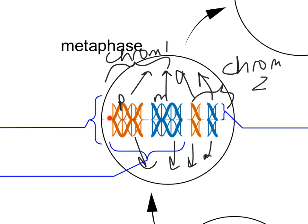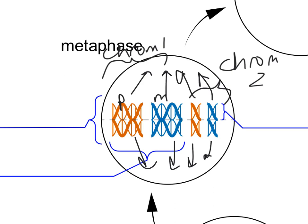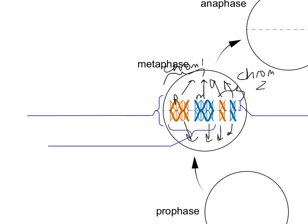What are the two versions of the same chromosome called together? They are homologous chromosomes. The mom and dad versions of chromosome 1 — those are homologous: two versions of the same chromosome. Dad version, mom version, chromosome 1. The same is true for the two copies of chromosome 2.